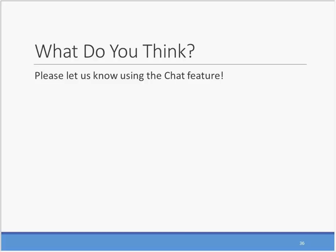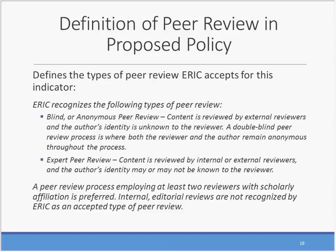A request came in to display slide 18 again — the definition of expert review. Expert peer review is content reviewed by internal or external reviewers, and the author's identity may or may not be known to the reviewer. This gets into the comment we received earlier, where there's a paper where there are literally only two people in the world that could have written it — one would be the reviewer and one would be the author. It's a small world and a niche field. There are times where you need to know the person, but you also need an expert to review. This is different from a technical working group style, but it is an important kind of process to recognize.